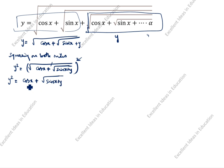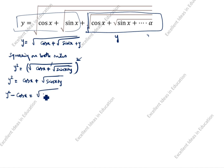Next step: bring it to this side. So y squared minus cos x is equal to root of sin x plus y.